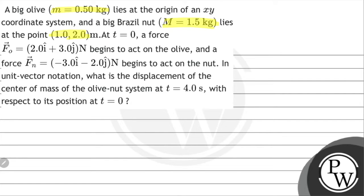At t equals 0, force 2i cap plus 3j cap begins to act on the olive, and force minus 3i cap minus 2j cap begins to act on the nut. In unit vector notation, what is the displacement of the center of mass of the olive-nut system at time 4 seconds with respect to the position at time 0?